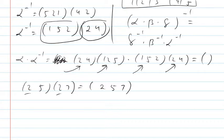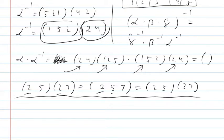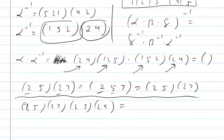By the same token, if you have a 3-cycle, you can decompose it into two 2-cycles using the first number. This can be generalized: if I have (2, 5), (2, 7), (2, 3), (2, 9) — a whole bunch of 2-cycles being composed with the same first number — watch what happens.